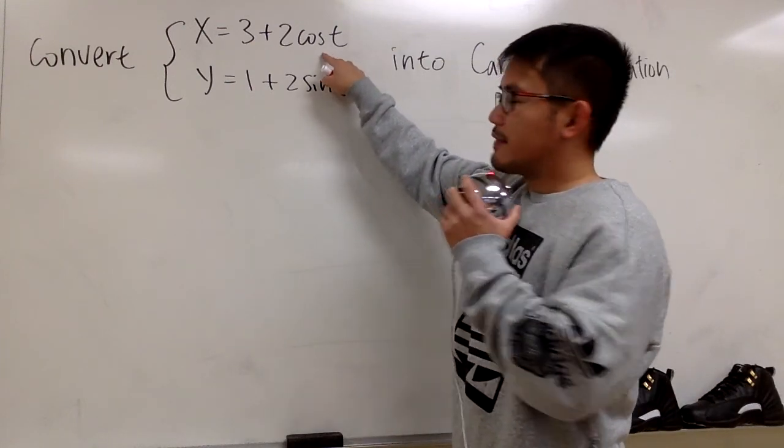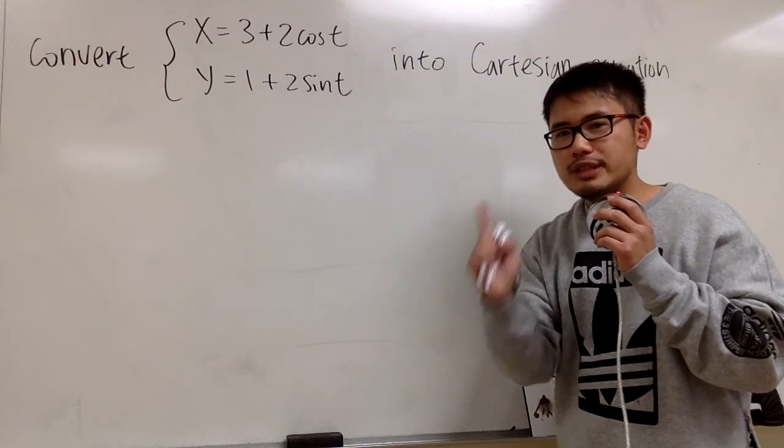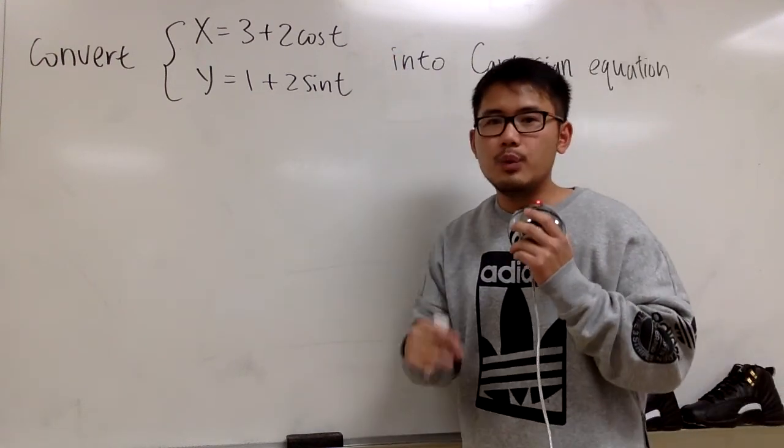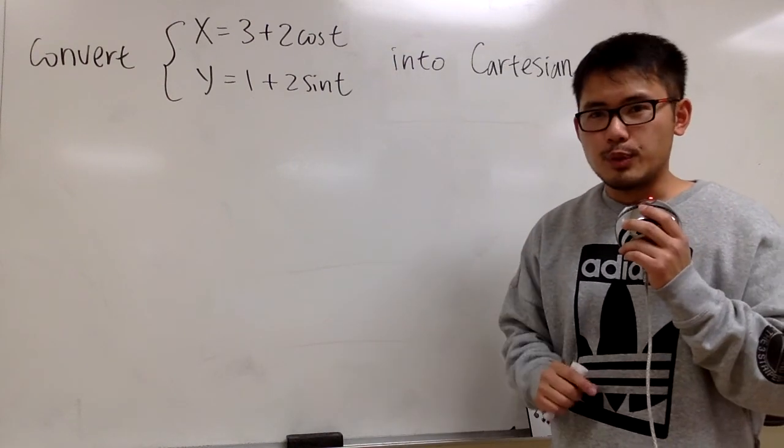Look at this! We have cosine t, and then we have sine t. The most important thing we want to pay attention to is the angles inside are the same, and we are dealing with sine and cosine, and this is what we can do.